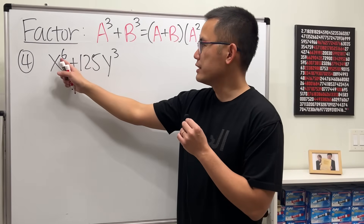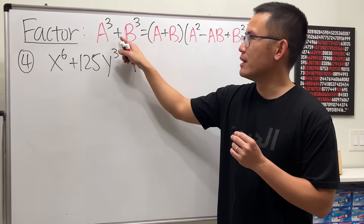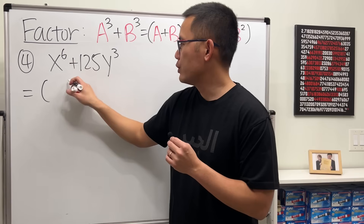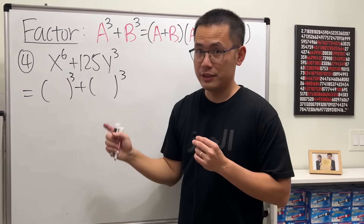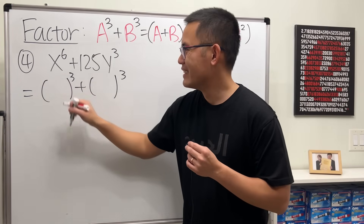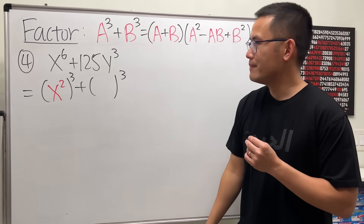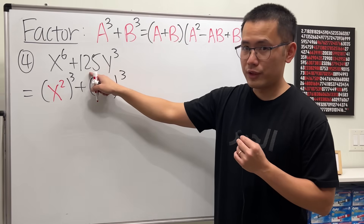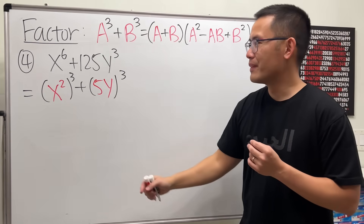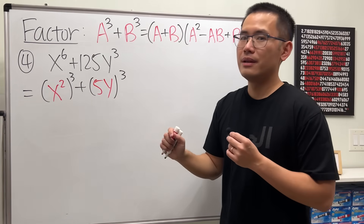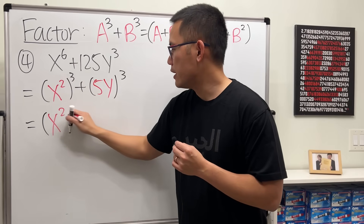For number four we have x to the sixth power plus 125y cubed — a sum of two cubes. Open two sets of parentheses with third power on the outside. For the first term, x squared goes inside because x squared to the third power gives x to the sixth. For the second, 5 to the third power gives 125, and we need a y. This is a and b. The first factor is a plus b: x squared plus 5y.